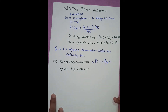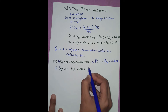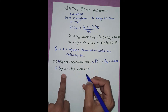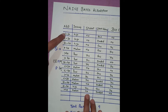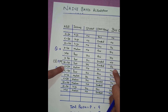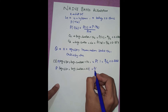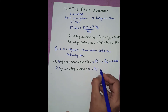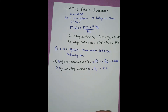The answer is 0.222. Similarly, when age ≤ 30 and buys computer = no, we count one, two, three — so three rows. Overall negative is five, giving 3/5, and the answer is 0.6.